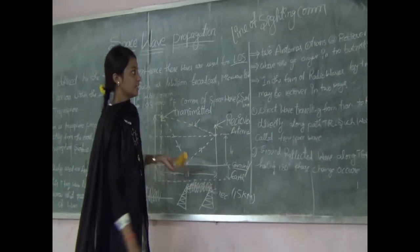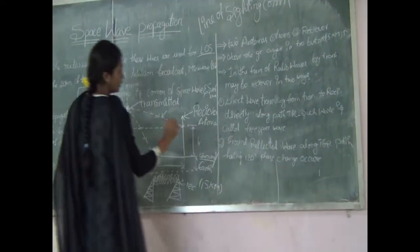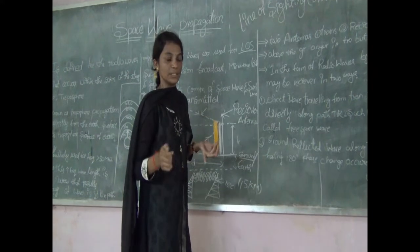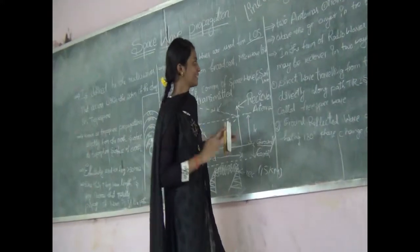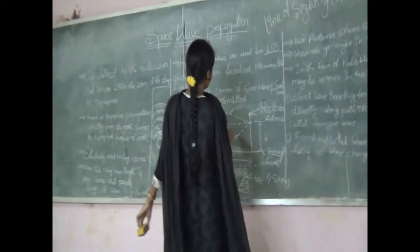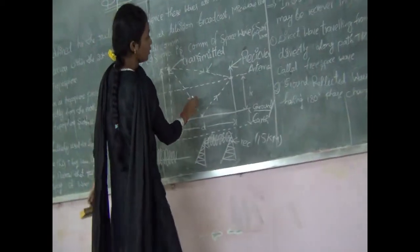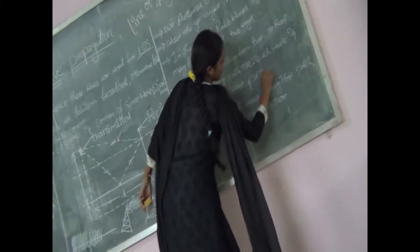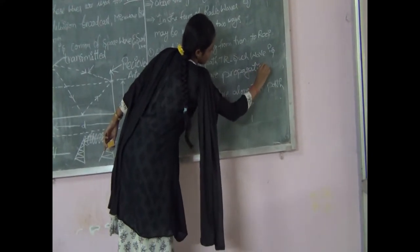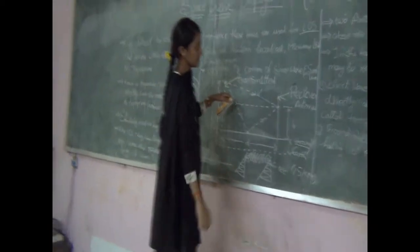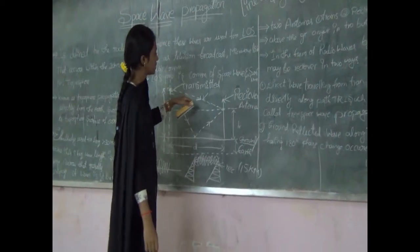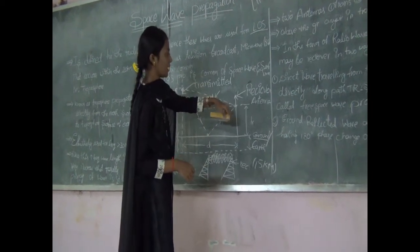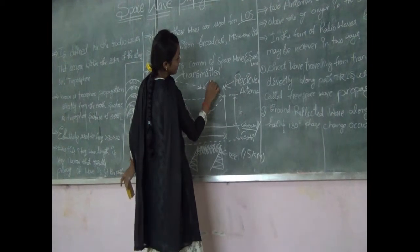It is in the form of radio waves, transmitted by the transmitter and received by the receiver in two ways. The first is a direct wave travelling from the transmitter to the receiver along the TR path. That wave is called free space wave propagation.